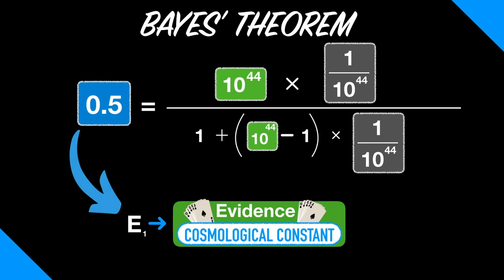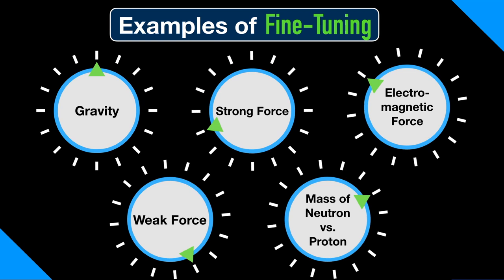And keep in mind, that is considering only the evidence of the cosmological constant. Once you factor in other cases of fine-tuning like I mentioned at the beginning of this video, especially the case of entropy, the level of confidence you should have in the intelligent necessary being hypothesis is high, really high.